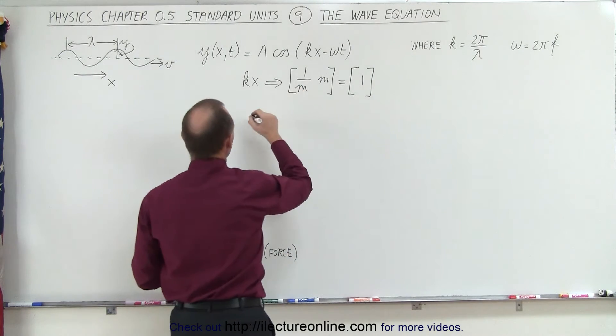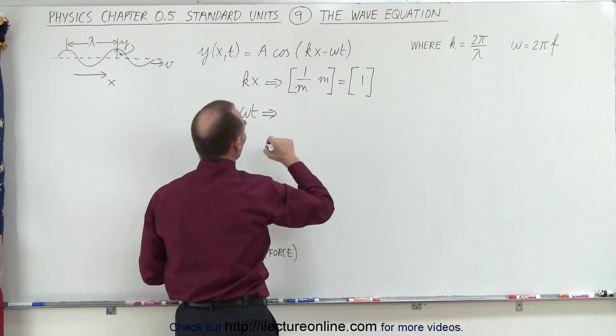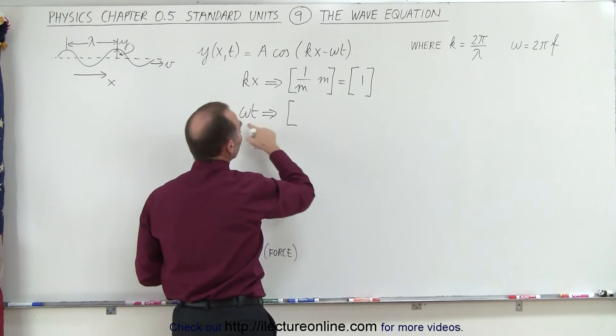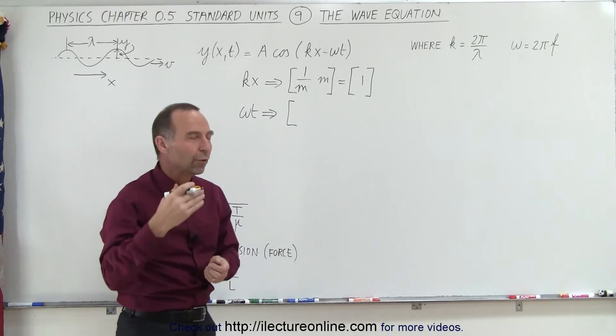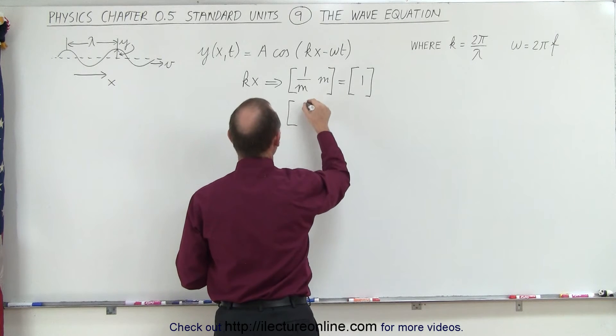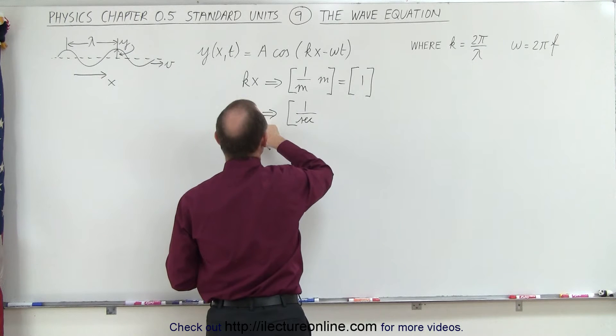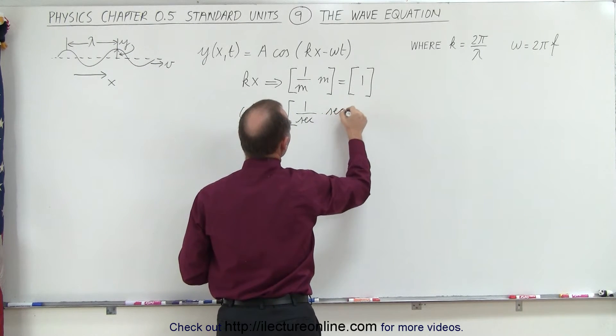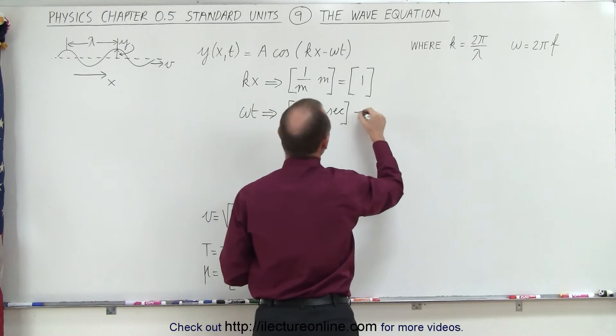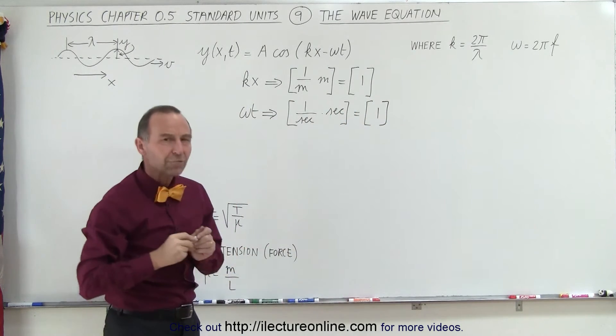Next we'll try omega t, and it'll become clear in just a moment why this is so. Omega is 2 pi times the frequency. Now frequency has units of 1 over seconds, so that would be 1 over seconds. And time has units of seconds, so times seconds. And then again you can see that the seconds cancel out, and then with no units. How can you have no units?